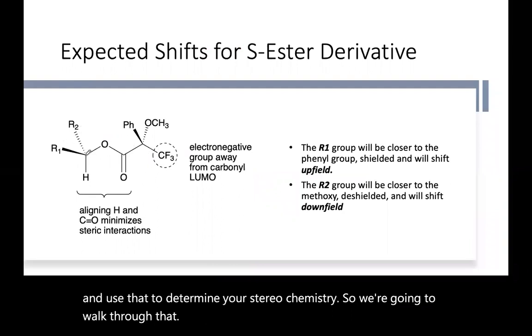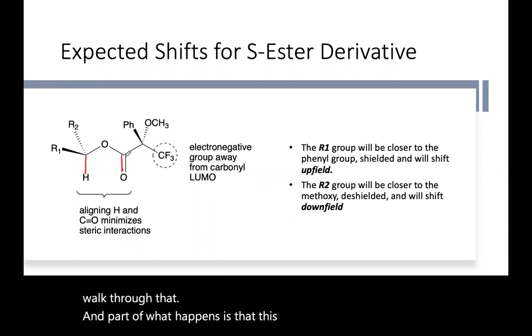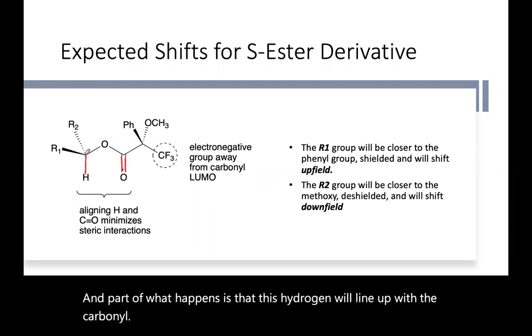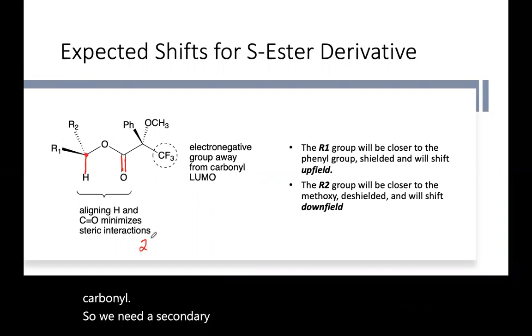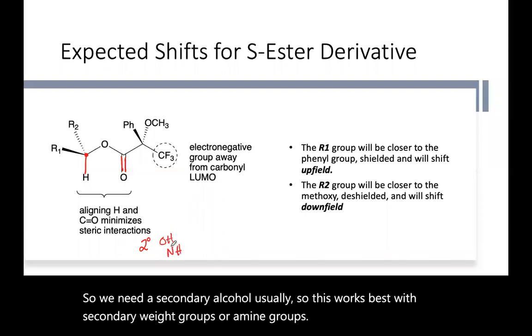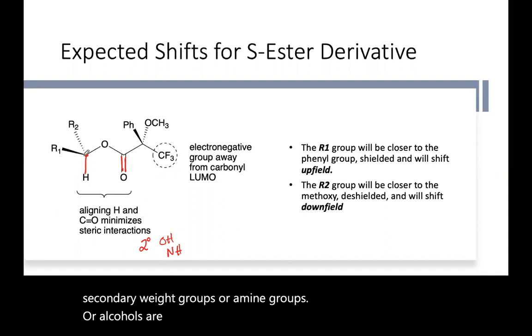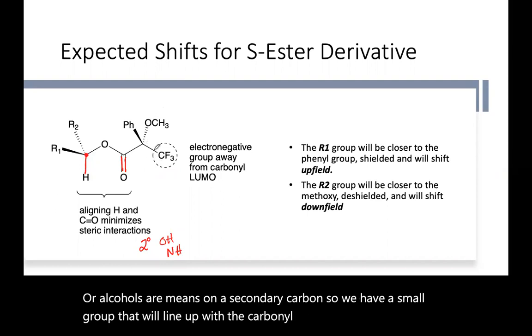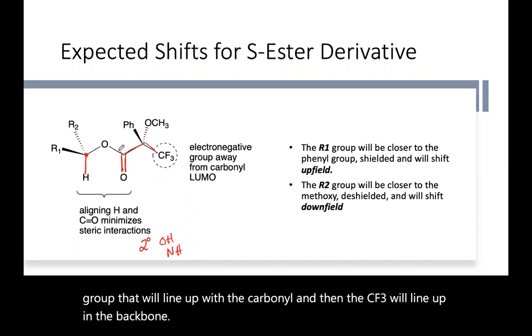And part of how, what happens is that this hydrogen will line up with the carbonyl. So we need a secondary alcohol usually. So this works best with secondary OH groups or amine groups or alcohols or amines on a secondary carbon. So we have a small group that will line up with the carbonyl and then the CF3 will line up in the backbone.